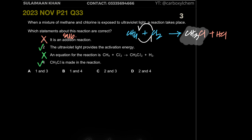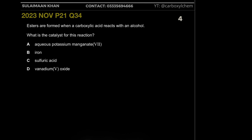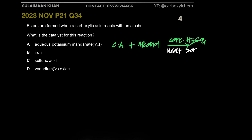Moving on — esters form when carboxylic acids react with alcohols, using concentrated sulfuric acid as catalyst and heat around 200°C. The question asks for the catalyst. Aqueous potassium manganate is used for oxidation of alcohols; iron is used in the Haber process; vanadium pentoxide is used in the Contact process. Sulfuric acid is the correct catalyst option.